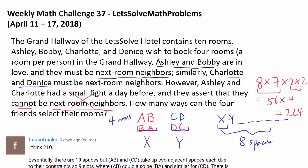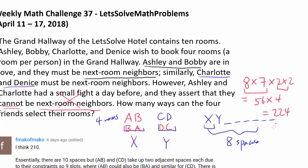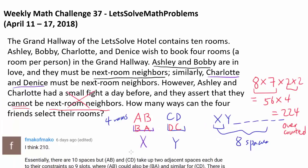We got 224 by ignoring the restriction that Ashley and Charlotte cannot be next-room neighbors, so 224 is over-counting — it is larger than our answer should be. So how can we get our answer? The only restriction we have is that Ashley and Charlotte cannot be next-room neighbors. If we count the cases where Ashley and Charlotte are next-room neighbors, we can subtract those cases from 224 and be left with all the valid cases.